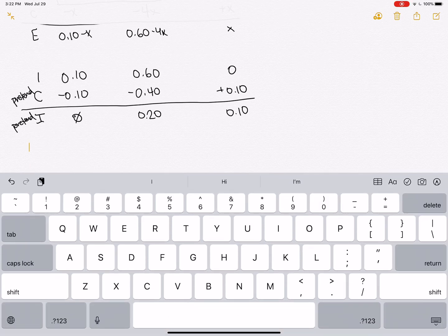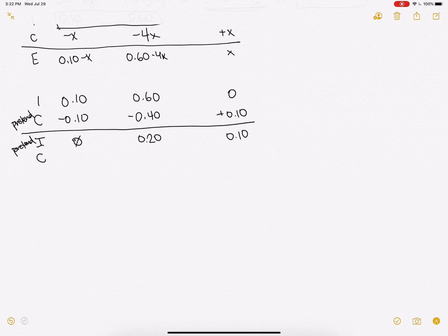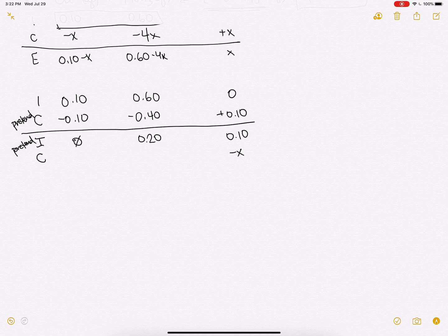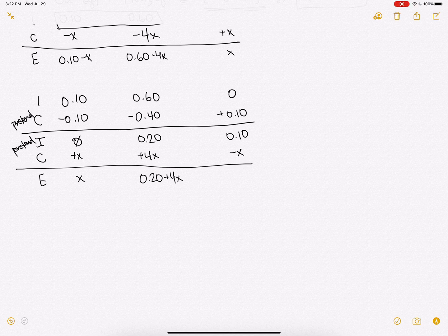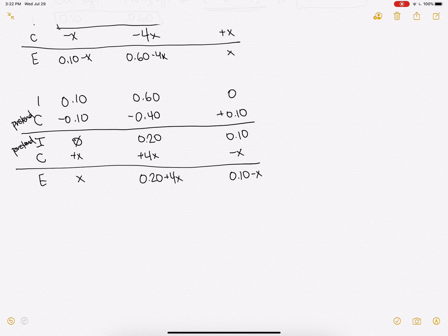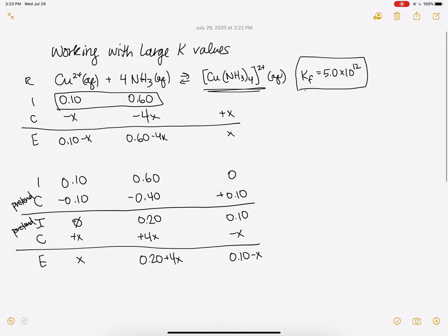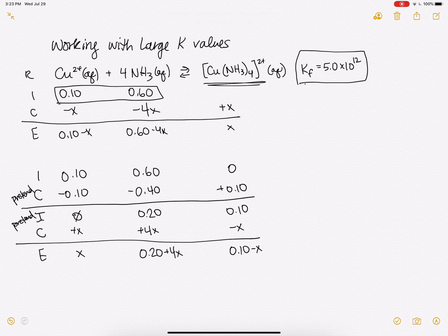So we're going to back-react this for our new change. We're going to back-react minus X, plus 4X, plus X. And at equilibrium, we'll have these concentrations. So we have these new equilibrium concentrations.